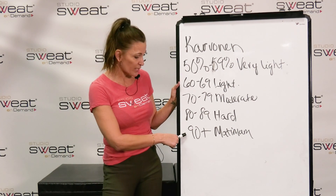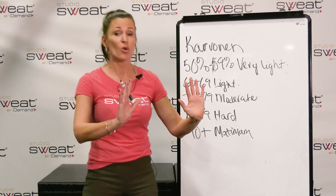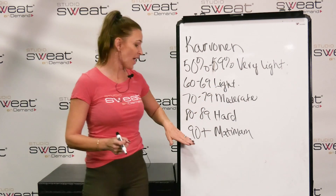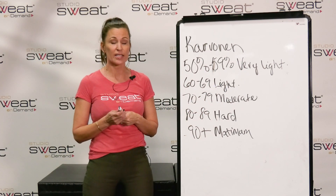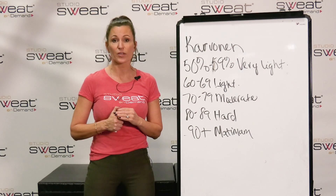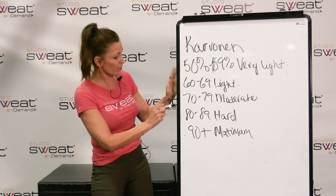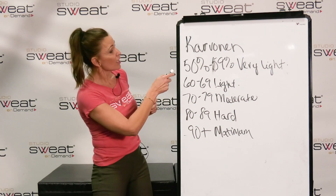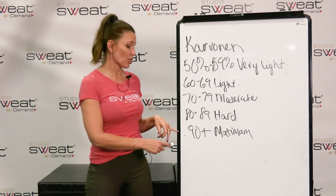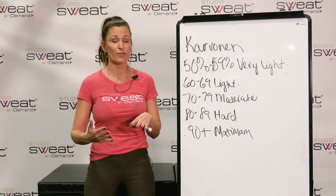When you get down to zone five — maximum intensity — it should feel like you're pushing a car up a hill with all your might, or your child is stuck under the car and you have to lift them off. That's often referred to as the red zone. You don't want to stay there too long, because zones two, three, and four are your fat-burning zones. When you go into zone five, you can actually start to burn muscle instead of fat.